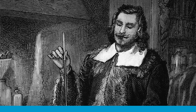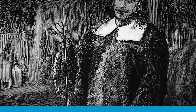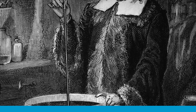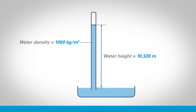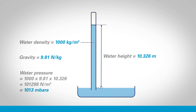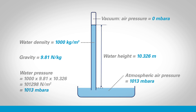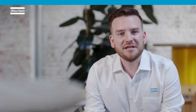Instead of a siphon, Torricelli filled a tube with water, plugged it at one end, and inverted it into a basin of water to study the effects. If we measure a height of 10.32 meters of water with a density of 1,000 kilograms per meter cubed under Earth's gravity of 9.81 newtons per kilogram, the equation for water pressure gives us 101,300 newtons per meter squared, or pascals of pressure at the bottom — that's 1,013 millibars absolute. Torricelli realized that by using a heavier liquid like mercury, he could achieve the same weight with a much shorter column.